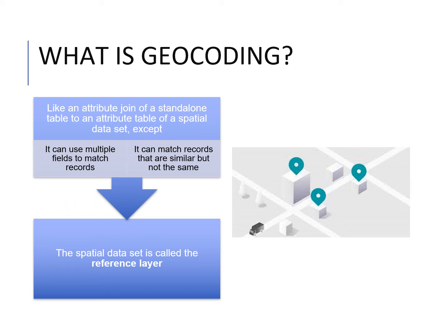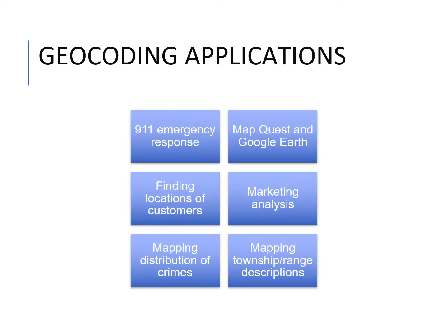So what is geocoding? It's like an attribute join of a standalone table to an attribute table of a spatial dataset, except it can use multiple fields to match records and it can match records that are similar but not the same — known as fuzzy matching. Geocoding applications range from 9-1-1 emergency response to mapping township and range descriptions, to finding locations of customers, marketing analysis, and mapping distribution of crimes.